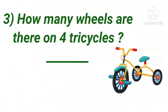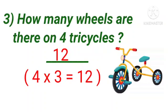Now, number 3. How many wheels are there on 4 tricycles? Yes, 12 wheels. What we will do? 4 tricycles multiply with 3 wheels. Total, we will get 12 wheels.